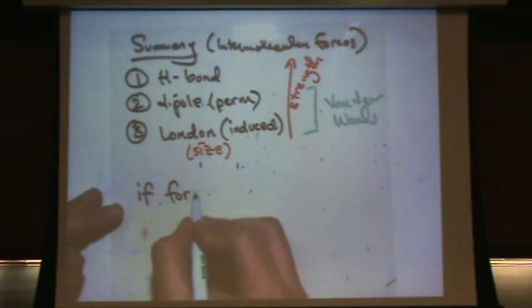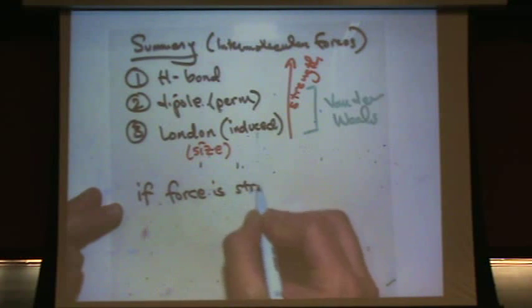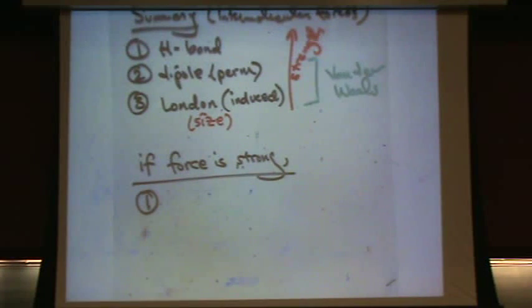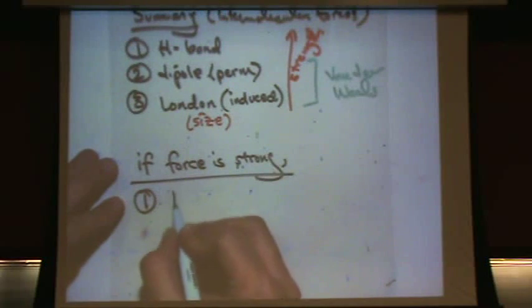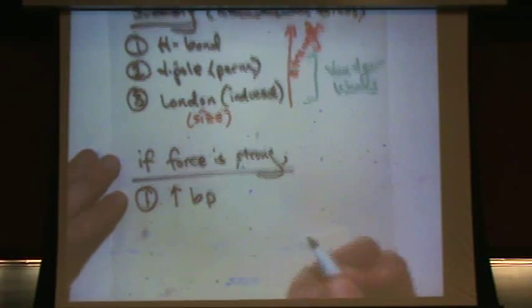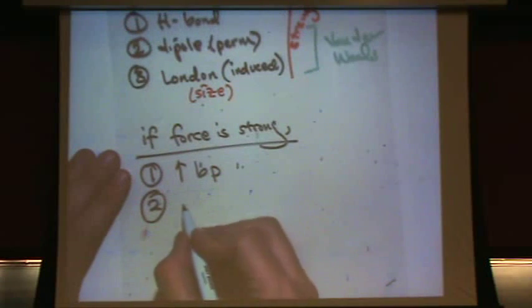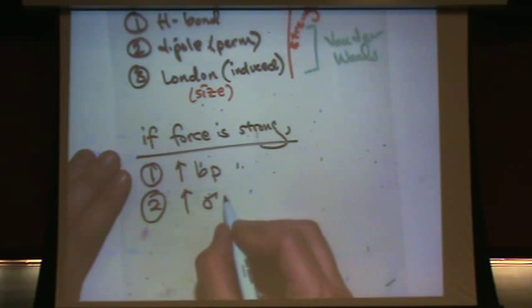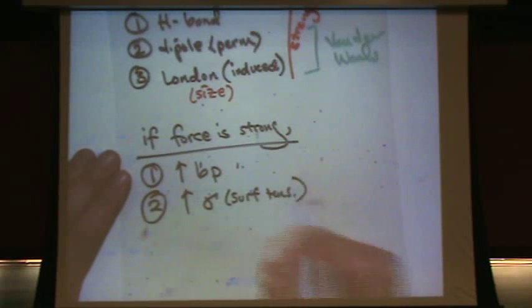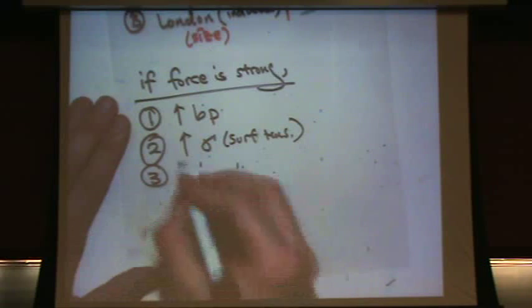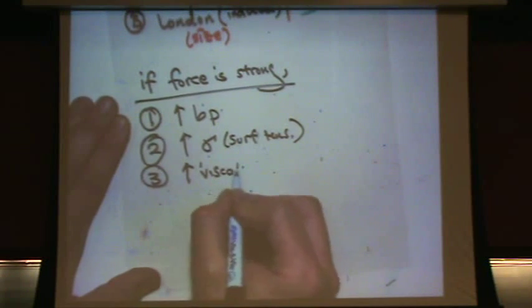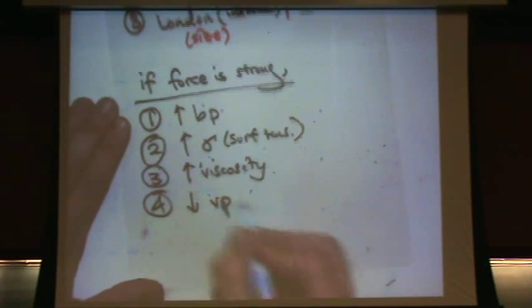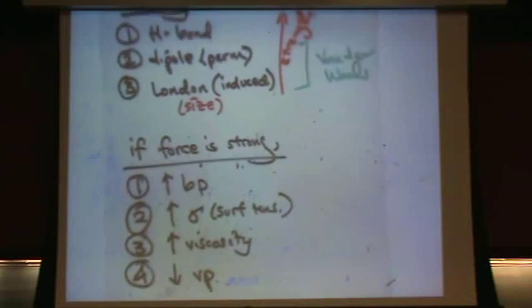Now, there's a second part to this summary. If the force is strong, then the boiling point is strong. What's gamma? Surface tension. Gamma is strong. And then three, viscosity is strong. And four, the vapor pressure is weak, small, low. That's the summary table. That's all that's going to be true.